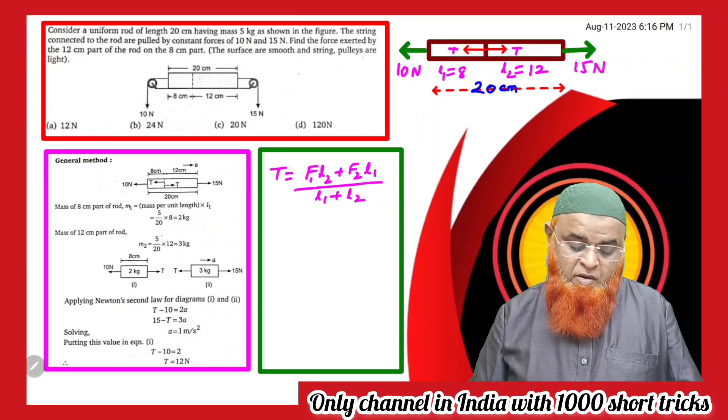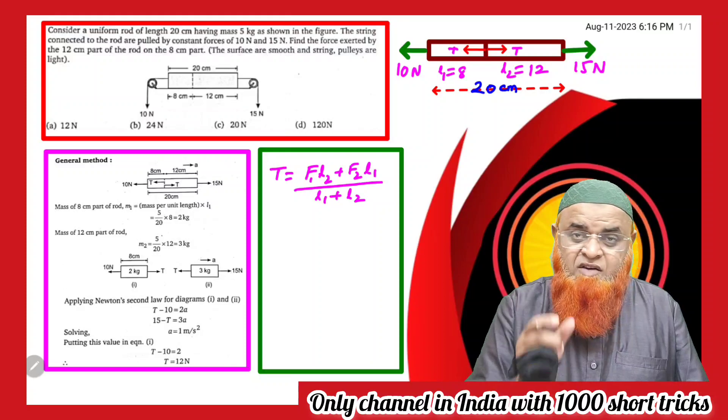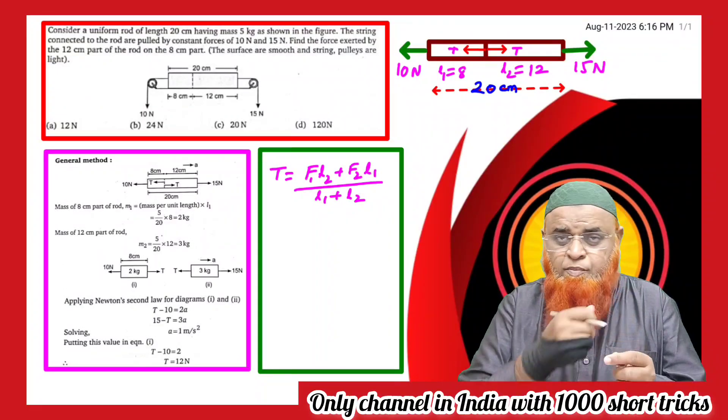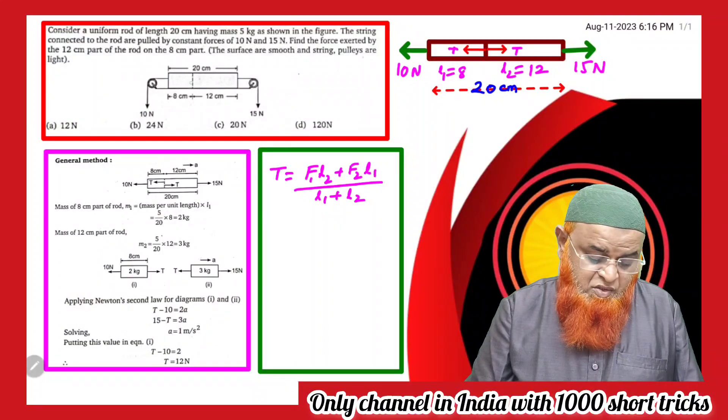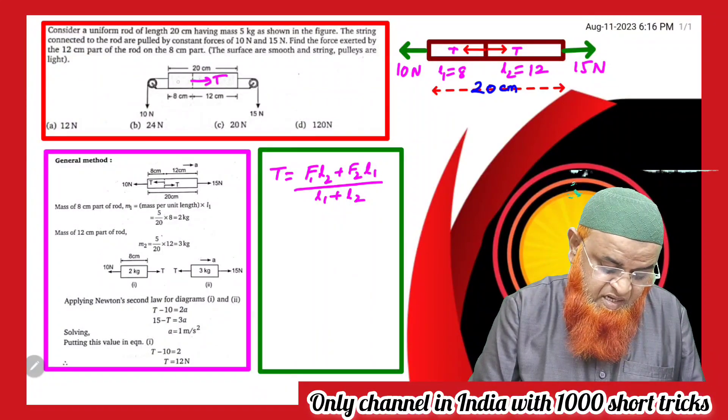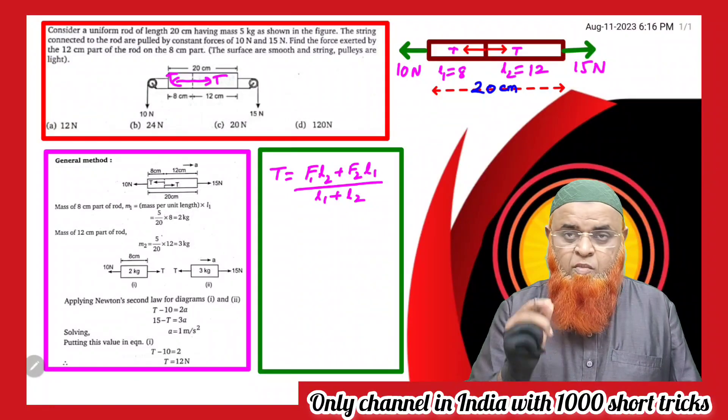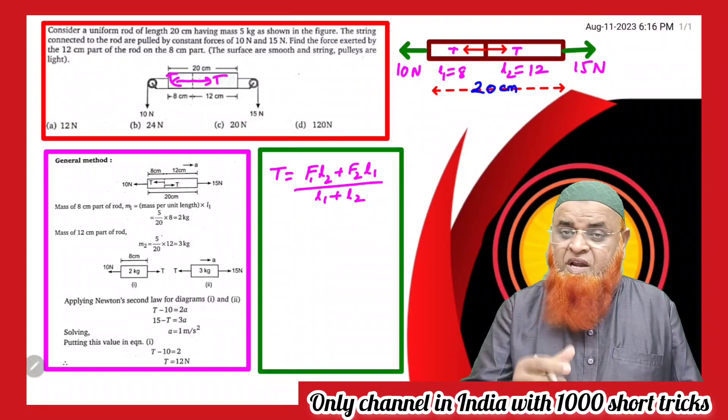You know the tension acting between the rod when you pull this side and that side is given by T. That tension which is represented in the diagram here, T and T, you can find out by using the formula: F1 times L2 plus F2 times L1, divided by L1 plus L2. What is that tension? Now let us see.